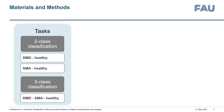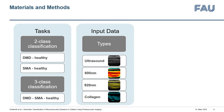We performed two-class classification between DMD and SMA as a proof of concept, and three-class classification for differential diagnosis. We used image data from two studies of both DMD and SMA from the Department of Pediatrics and Adolescent Medicine at the University Hospital in Erlangen.